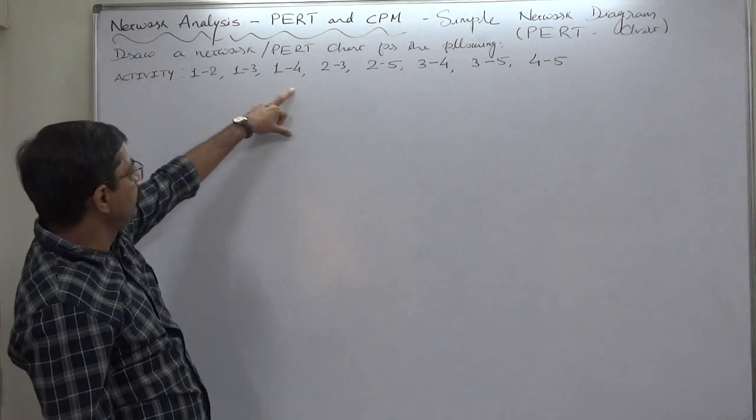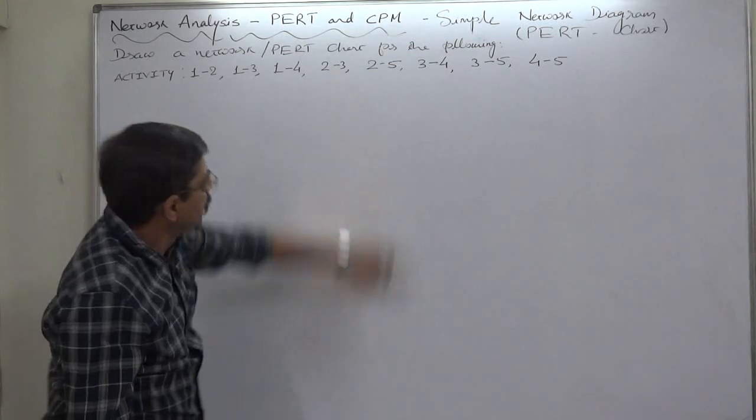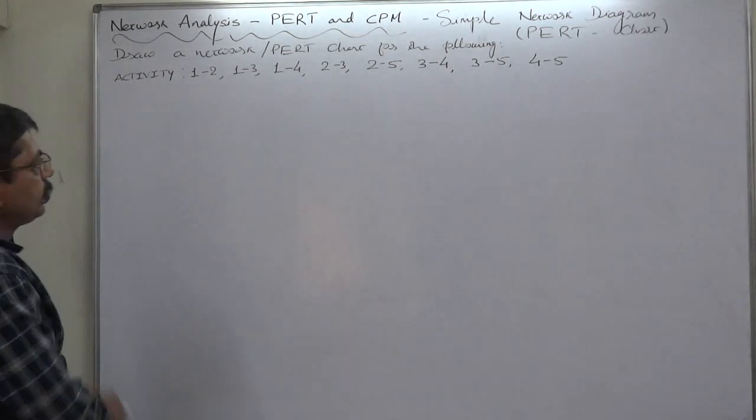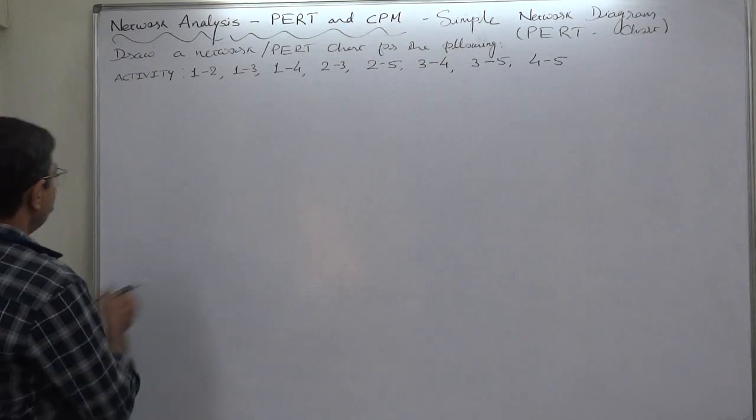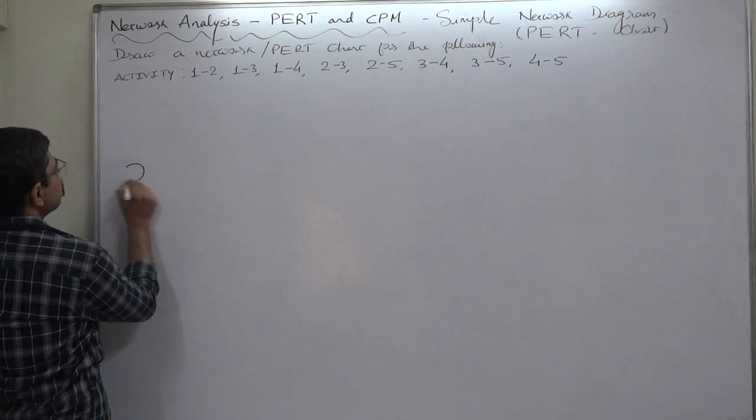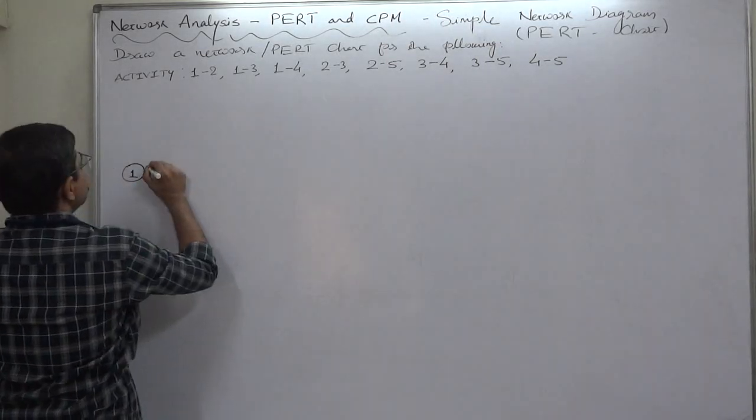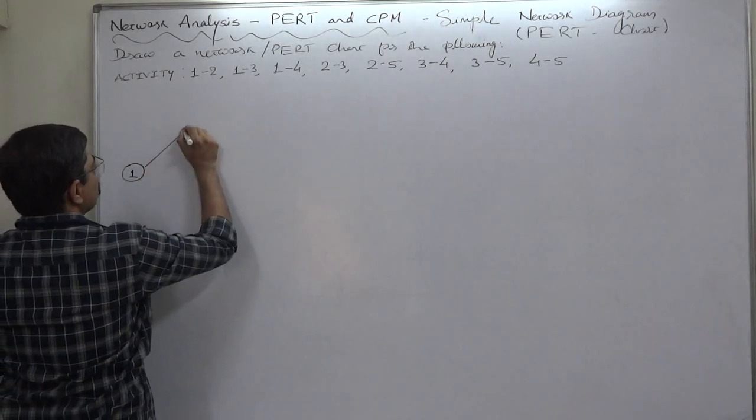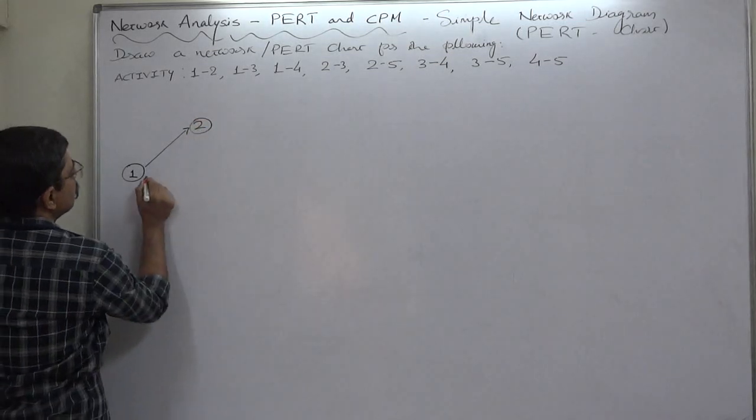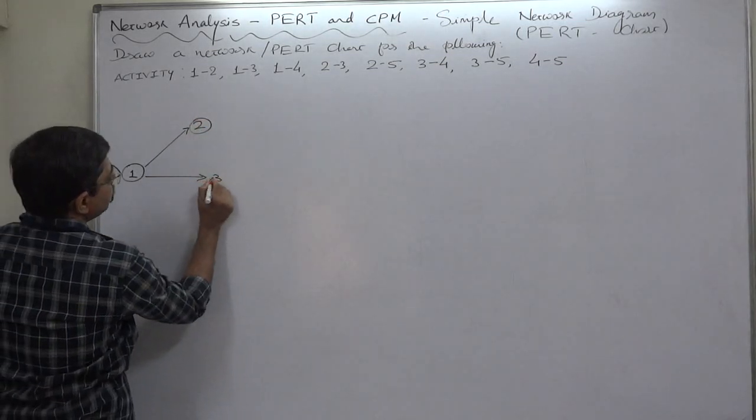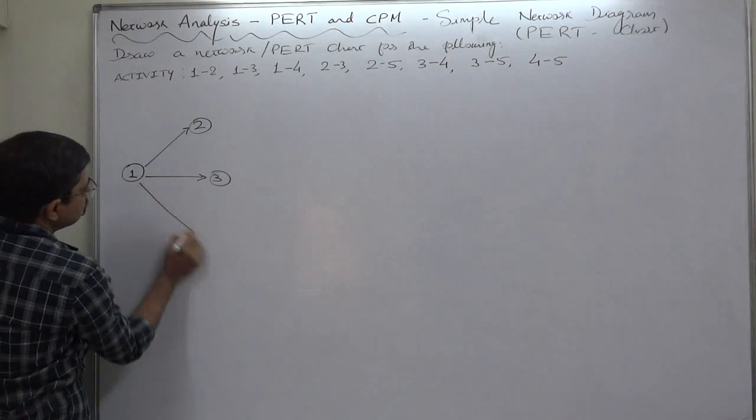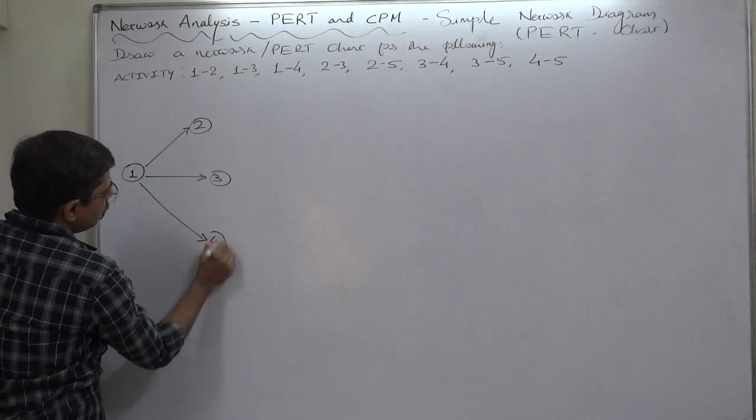Then from event number 2, another activity starts and goes to node number 3. So let's start. Say the first node is 1, and from that three activities start. Say this is 2, this is 3, and this is 4. This is our common interpretation.